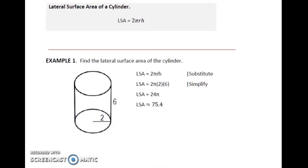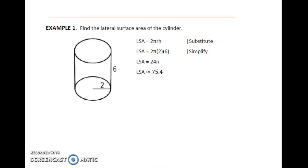Here's an example for finding lateral surface area of a cylinder. If we have a cylinder with radius 2 and height 6, then we can find the lateral surface area with this formula. We just plug in 2 for the radius and 6 for the height. Simplify, plug this in the calculator to get approximately 75.4 as the lateral surface area of the cylinder.